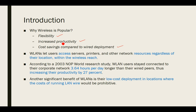How is it flexible? Wireless LAN lets users, servers, printers, and other network resources be accessed regardless of their location within the wireless range. We can access any wireless device if we are in the range of that particular device. That is called flexibility.